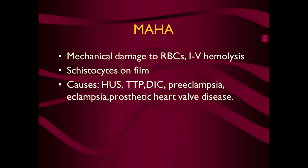The next hemolytic anemia is MAHA — microangiopathic hemolytic anemia. In MAHA, the microvessels are functionally and structurally dysfunctional; they cause mechanical damage to the RBCs. The difference is that hemolysis is intravascular. When you check the CBC, there will be the appearance of schistocytes on the peripheral film.